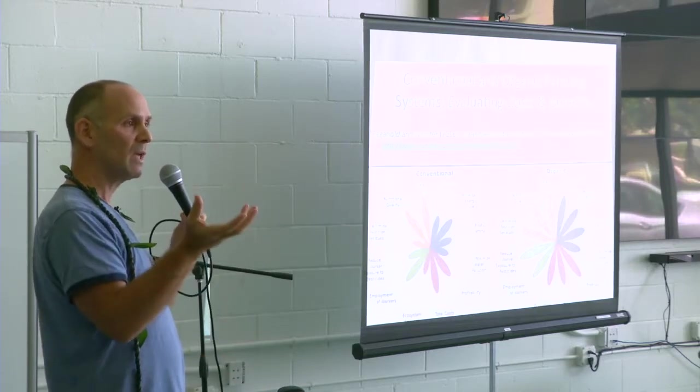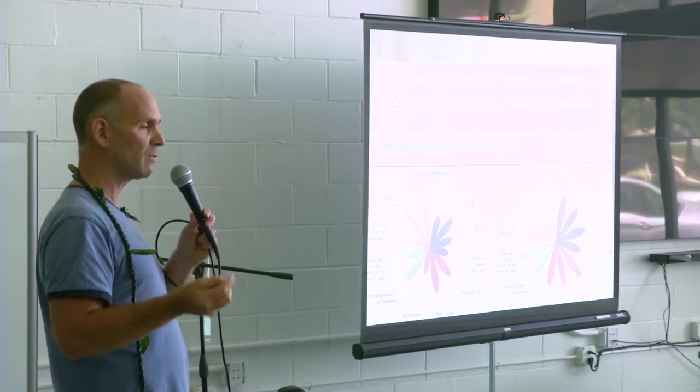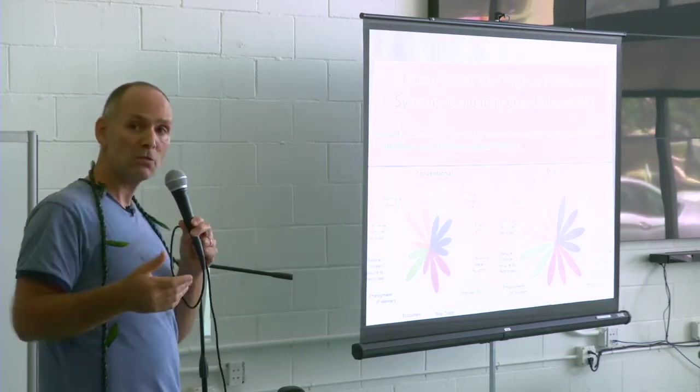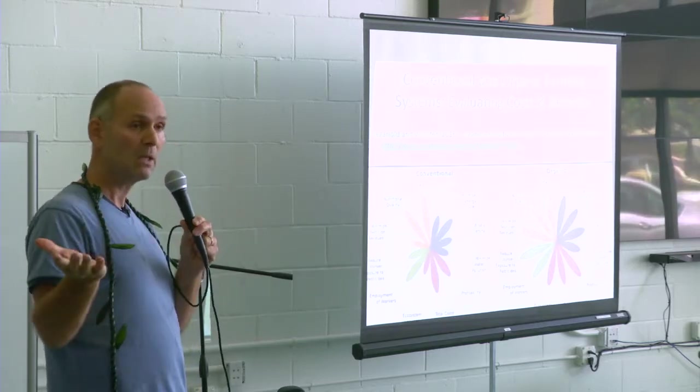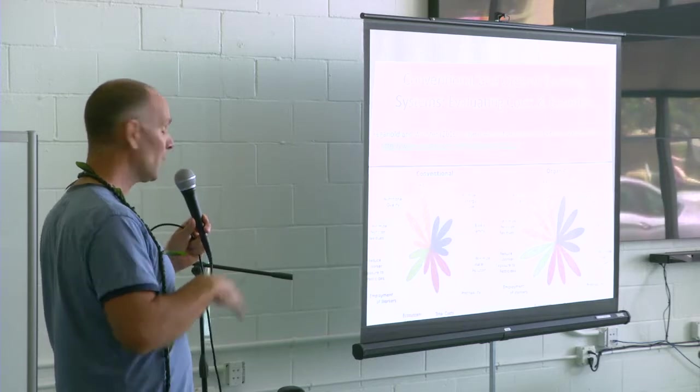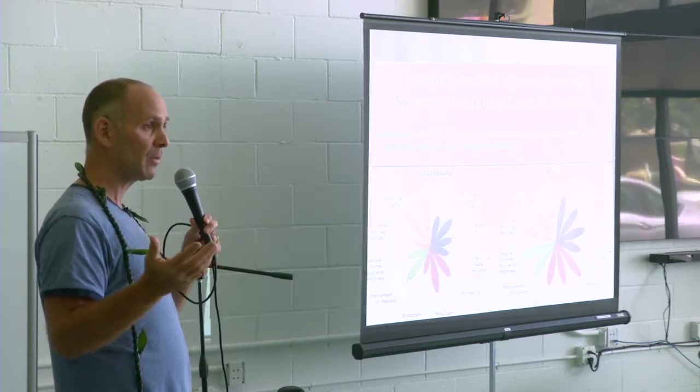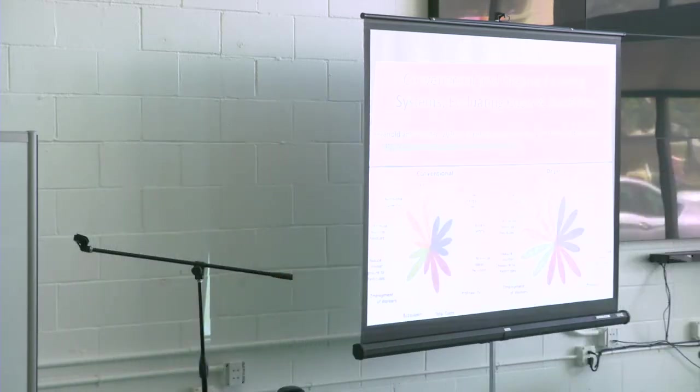We now have about 40 to 50 years of accumulated scientific information substantiating that these alternatively managed farming systems outperform conventional farming systems, as many would expect, across nearly every single environmental and social and economic performance metric. That's important for the type of food and agricultural system that we might want to develop here in Hawaii.